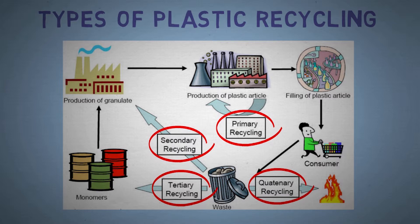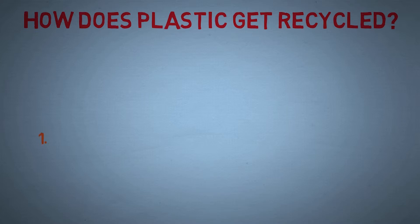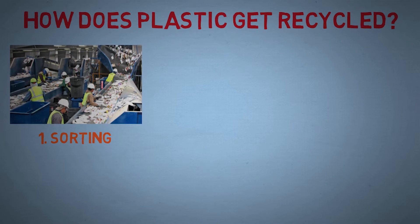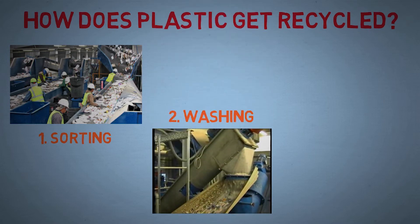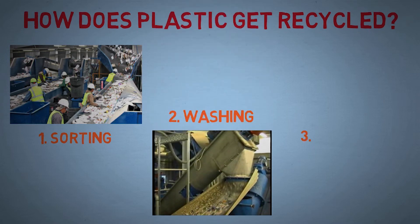But what happens to plastic while it is being recycled? Let's try to understand. The first step is sorting, in which plastic is separated according to its type and make. In the next step, the plastic is washed properly to remove any impurities. After washing, the plastics are passed into shredders which break them into small pellets.